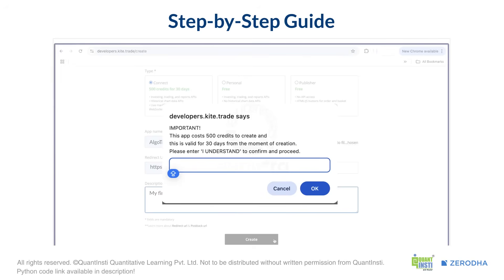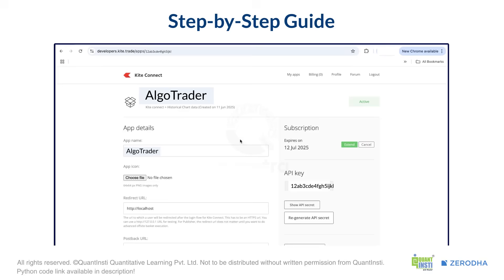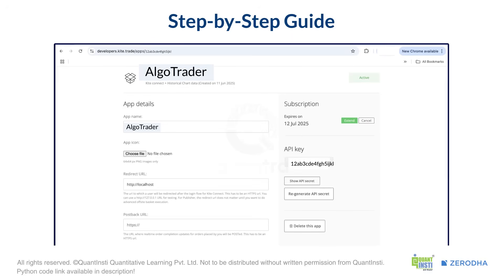You will then see a pop-up to confirm that you understand that this app creation will use 500 credits. All you need to do is type in 'I understand.' And just like that, you're done. You can now view your app and find your API key and API secret on the right side. These are like your app's unique username and password. Keep them safe. Don't share them with anyone.